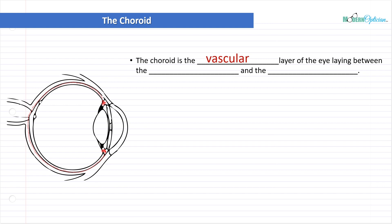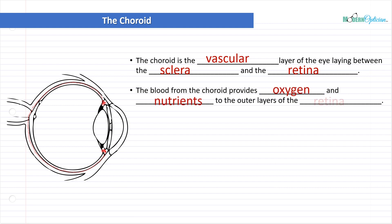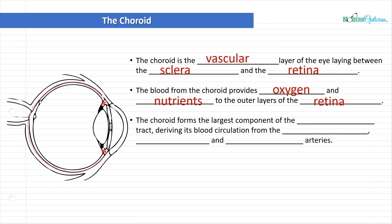Now, the choroid is the vascular layer of the eye laying between the sclera and the retina. The blood from the choroid provides oxygen and nutrients to the outer layers of the retina. So the choroid is the main blood supply of the eye. This is the number one thing to remember. It is the vascular tissue referring to the cardiovascular system, and that is where all the blood is found.